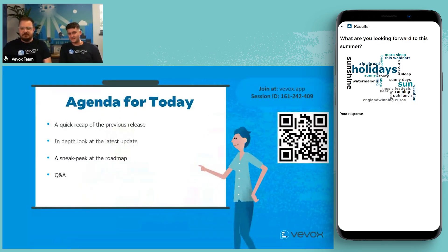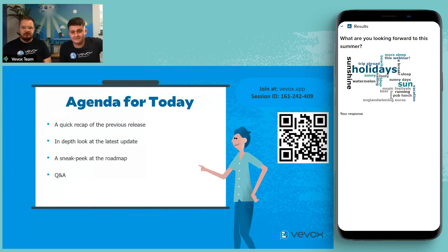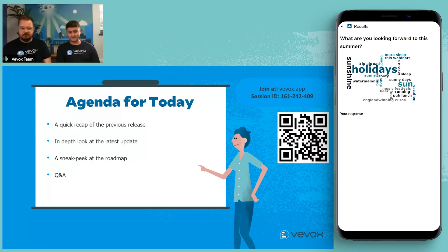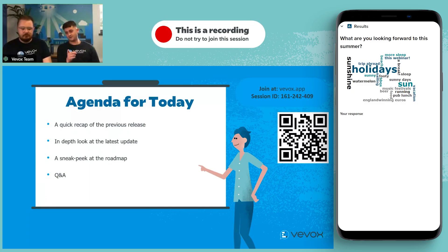Just going over the agenda for the day. We're going to go over the previous release — all the things that came out about three or four weeks ago — and then an in-depth look at the new update that's coming. Then we'll have a sneak peek at the roadmap, so things to come in the future, and then a Q&A at the end. Make sure you're scanning that QR code and sending your questions in.